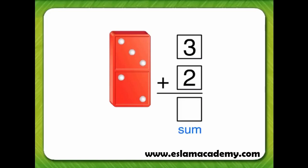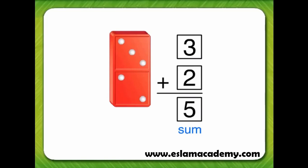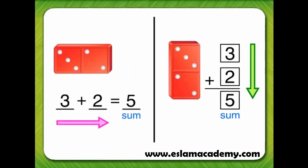What is the sum of three plus two? One, two, three, four. When we add three plus two down, the sum is five. So, when we add three plus two across, the sum is five. And when we add three plus two down, the sum is the same — five.